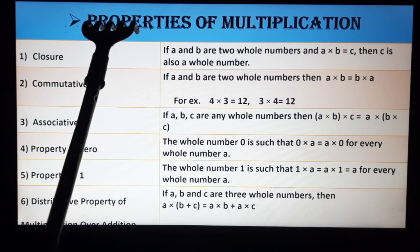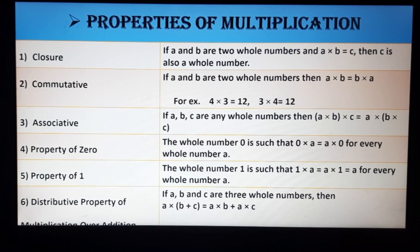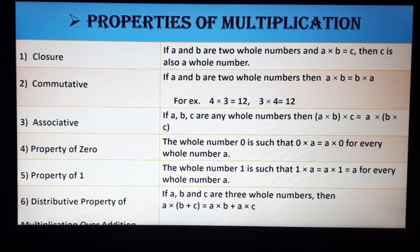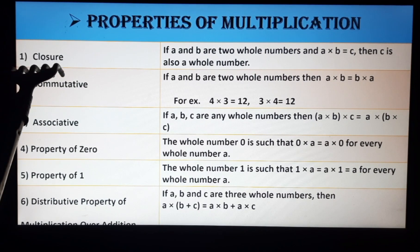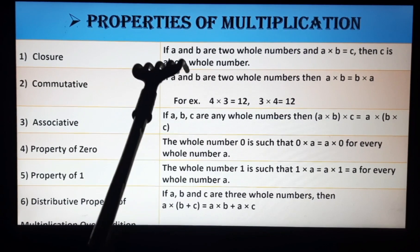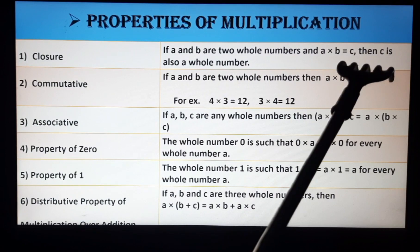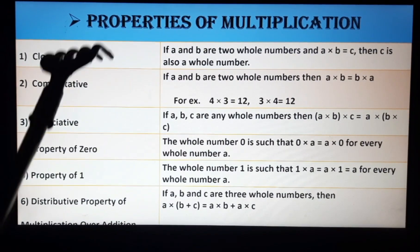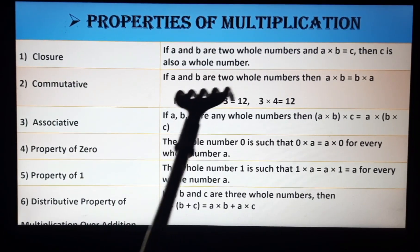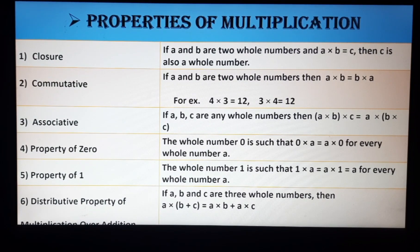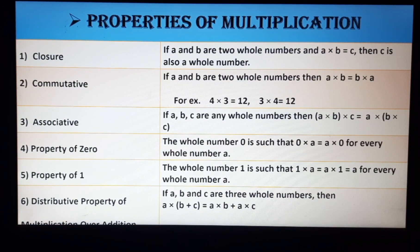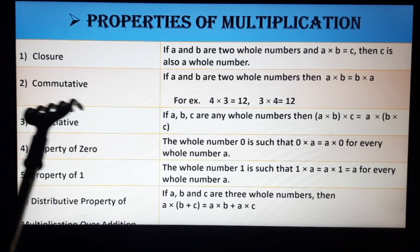Now we are discussing properties of multiplication. The first is the closure property. If a × b = c, then c will also be a whole number. So if you multiply any two whole numbers, the result is also a whole number — it follows the closure property.